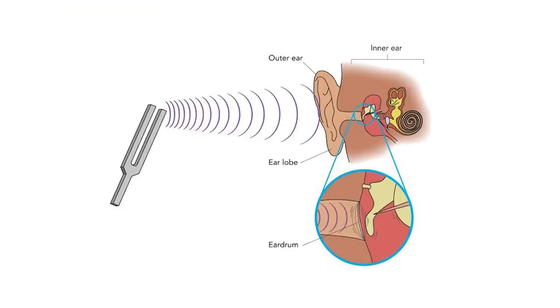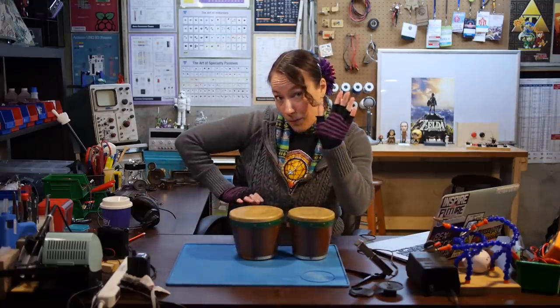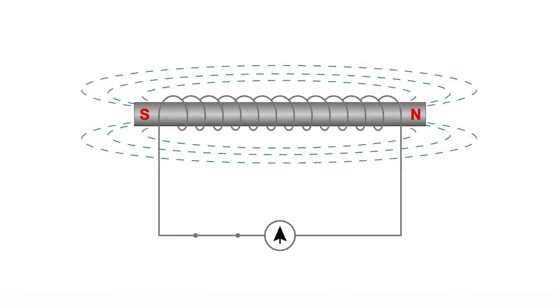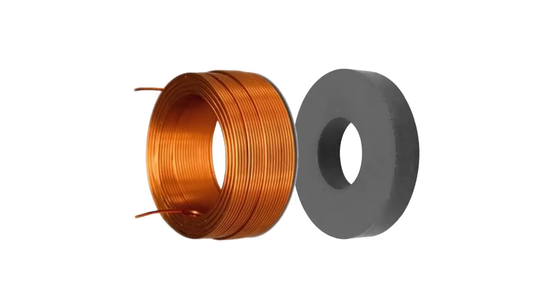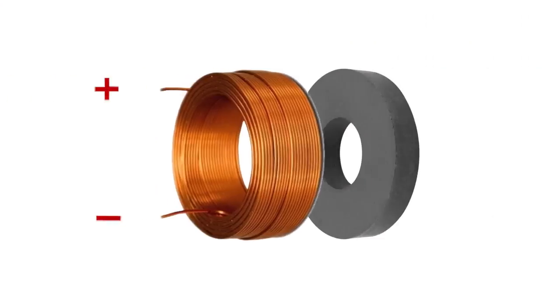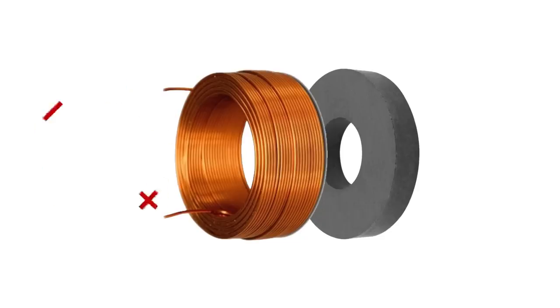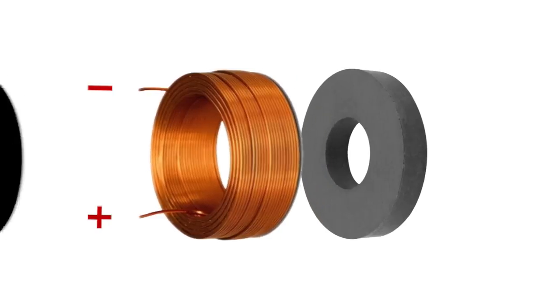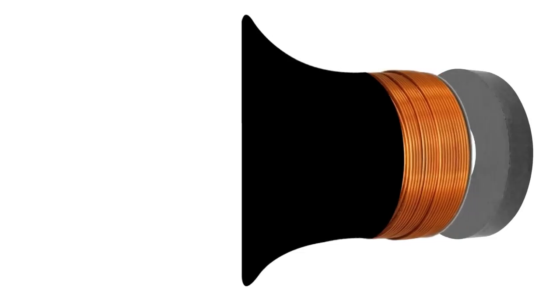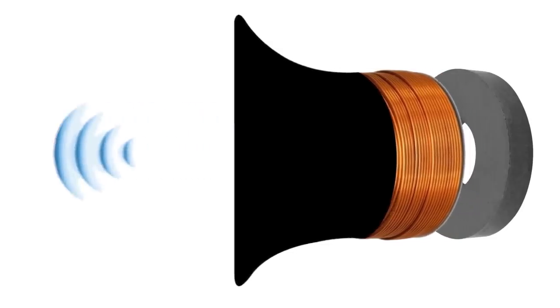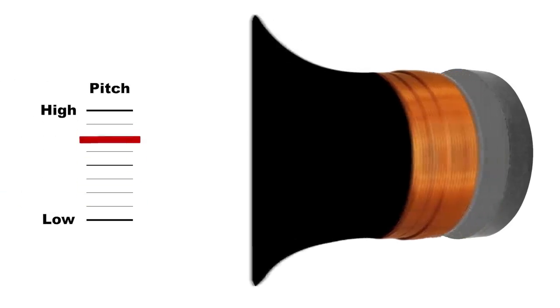Our eardrums are diaphragms that vibrate when interpreting sound. We can create sounds similarly by causing a diaphragm to vibrate, like these drum heads. We'll start by looking at dynamic speakers. We've learned about inductors and how a magnetic field is generated when current is passed through a coil. In a dynamic speaker, a permanent magnet and an electromagnet are made to work together to move a diaphragm. When current is passed through the coil in one direction, the poles attract the coil towards the permanent magnet. When current is passed in the other direction, its poles are reversed and it is repelled away. We can control the volume by controlling the amount of current, and the pitch by controlling the frequency that the diaphragm moves back and forth.